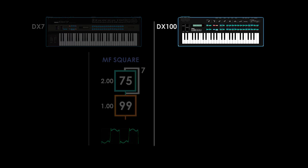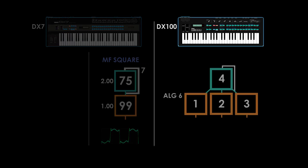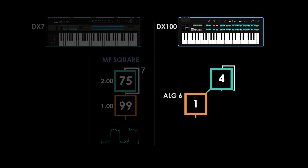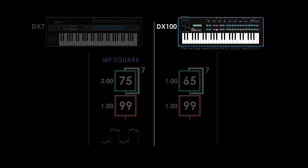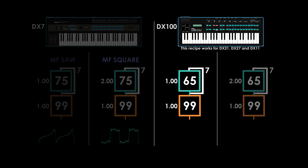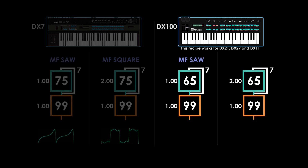Feedback values are white and on the corner of the corresponding operator. So initialize a patch, select algorithm 6, use operator 1 as carrier and operator 4 as modulator with feedback. Program these values in and save them as separate patches named MF Saw and MF Square.